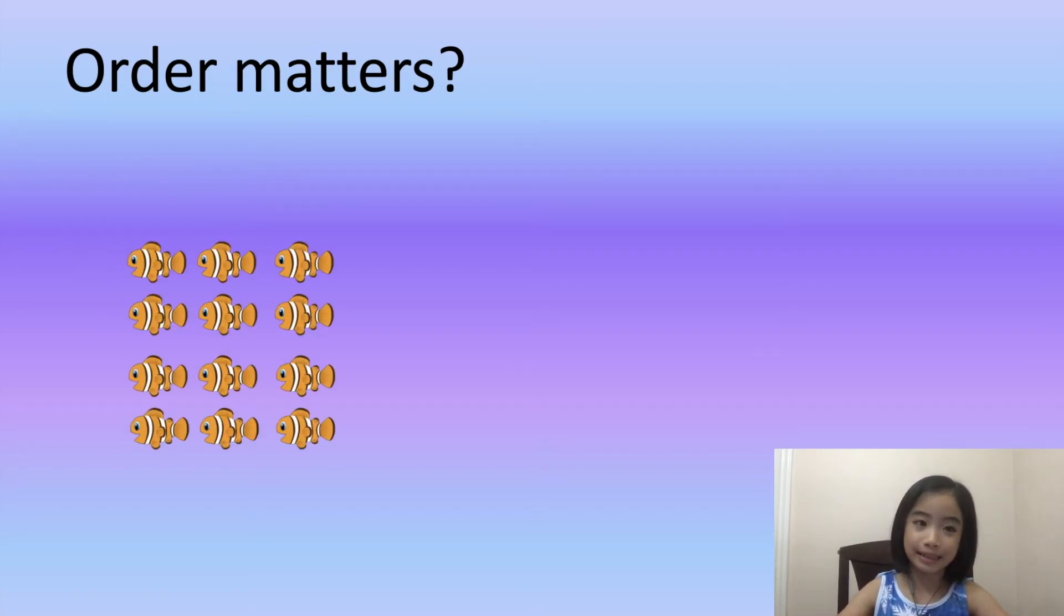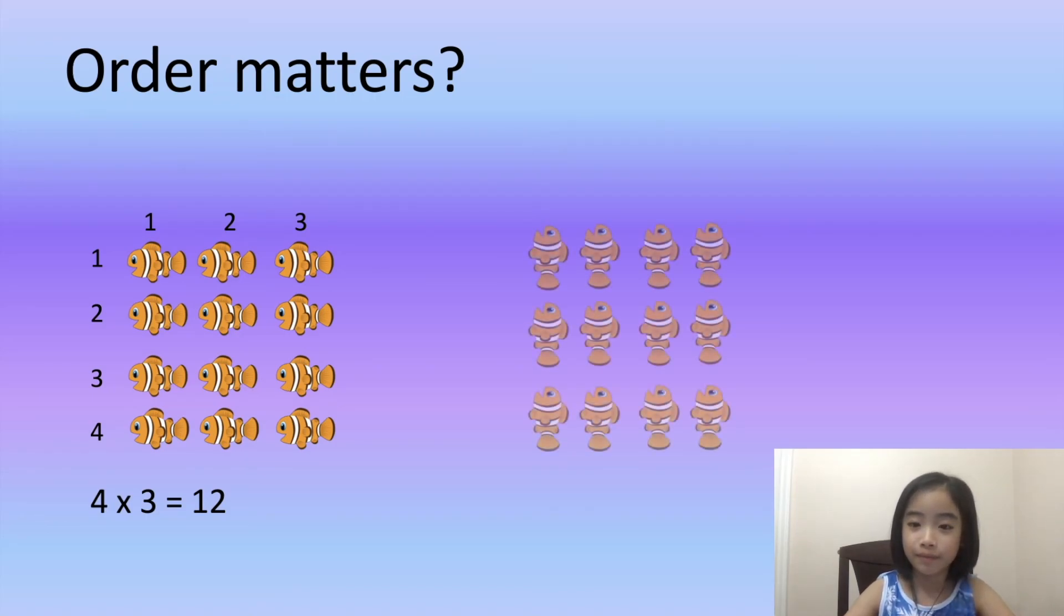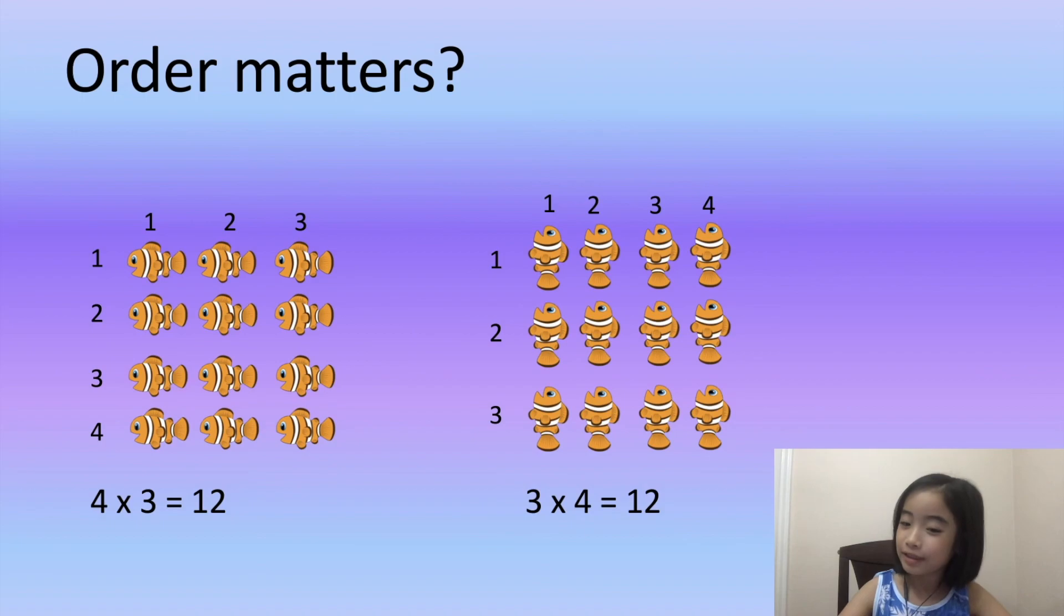Let's picture this. I have twelve fishes with four rows and three columns. Four times three equals twelve. And here, I have the same group of fish, but I just rotated them. I have three rows and four columns. Three times four still equals twelve.